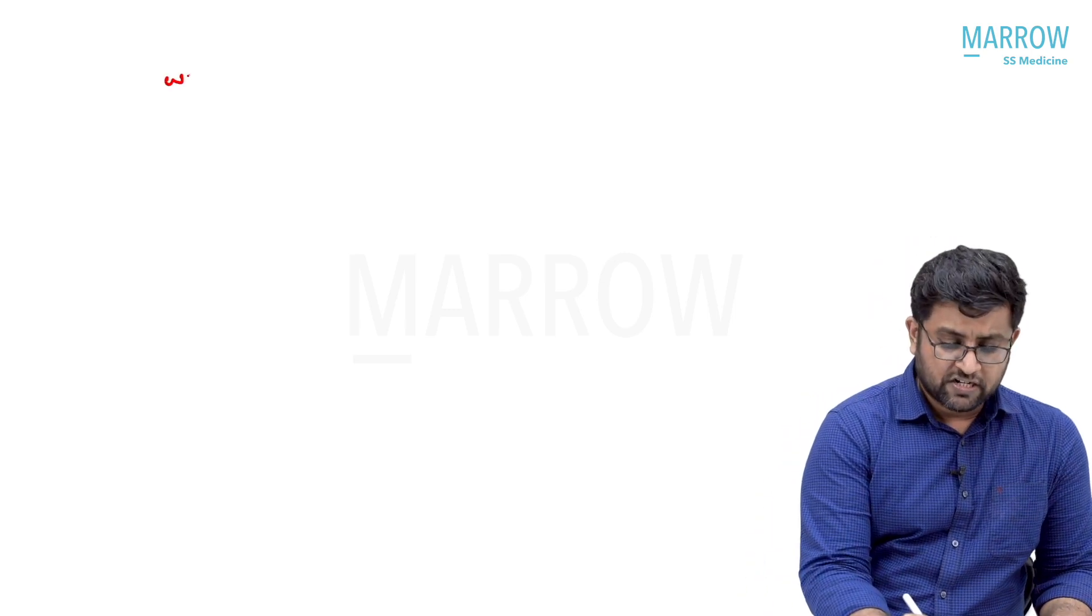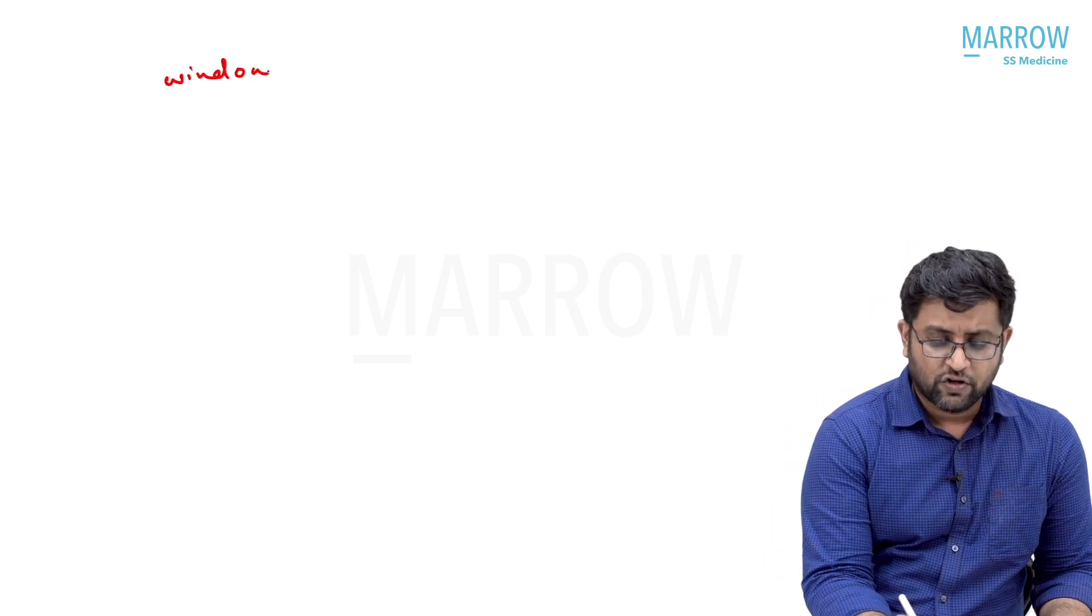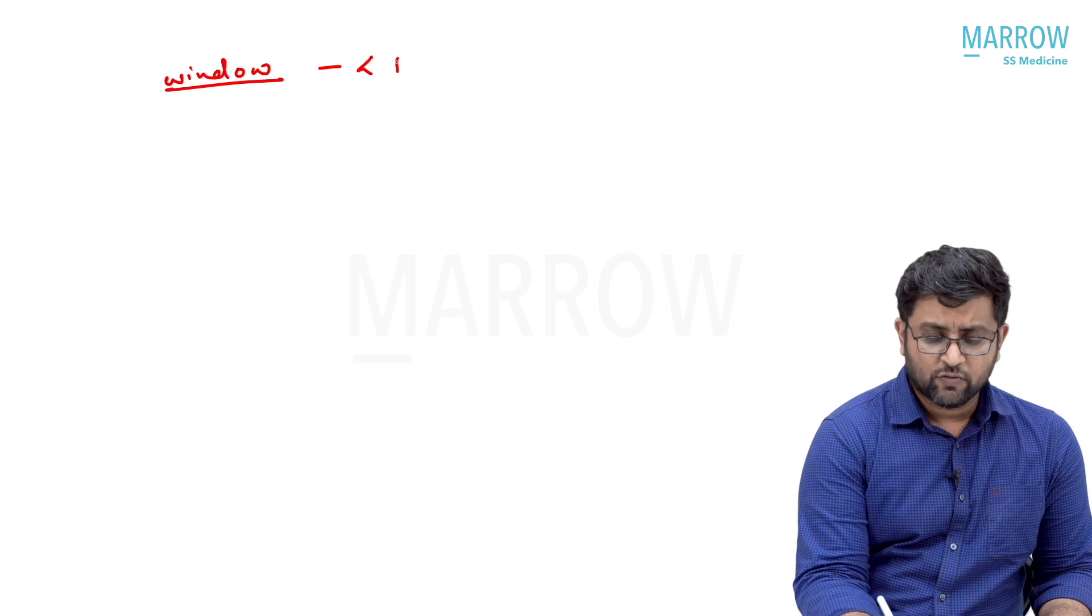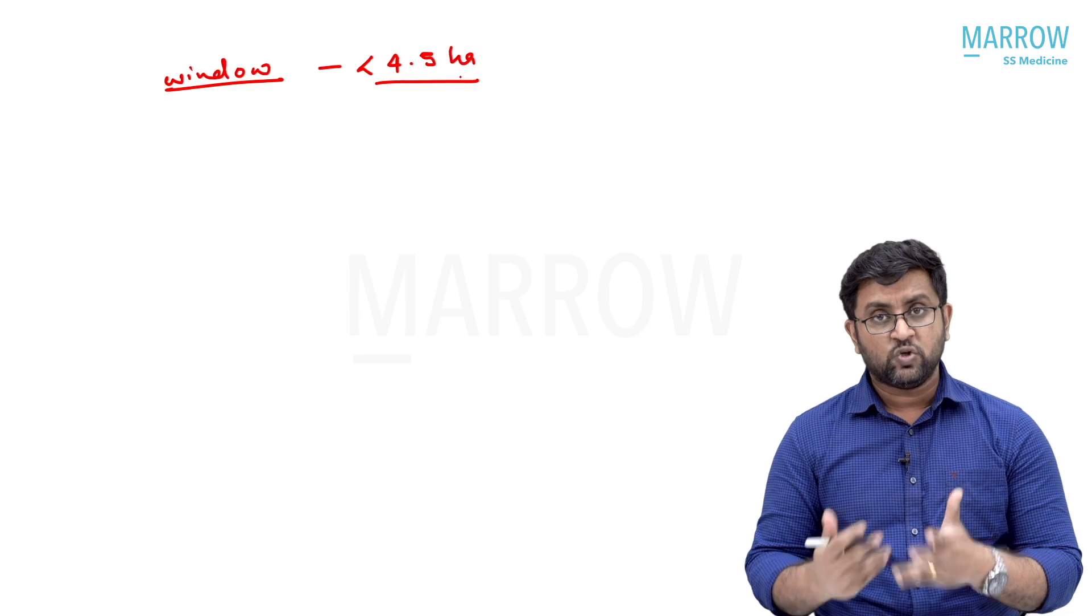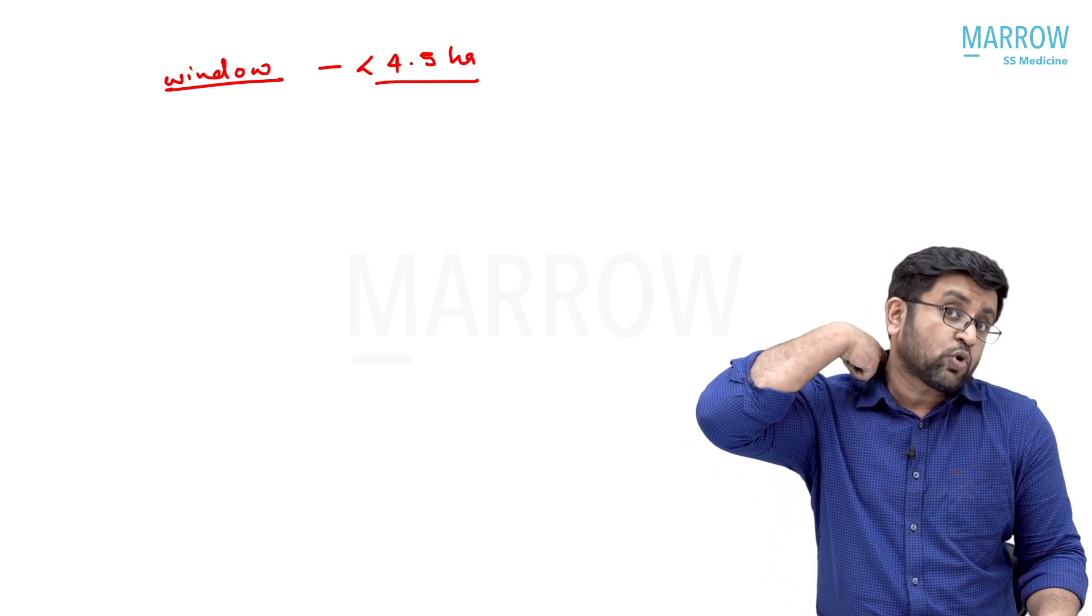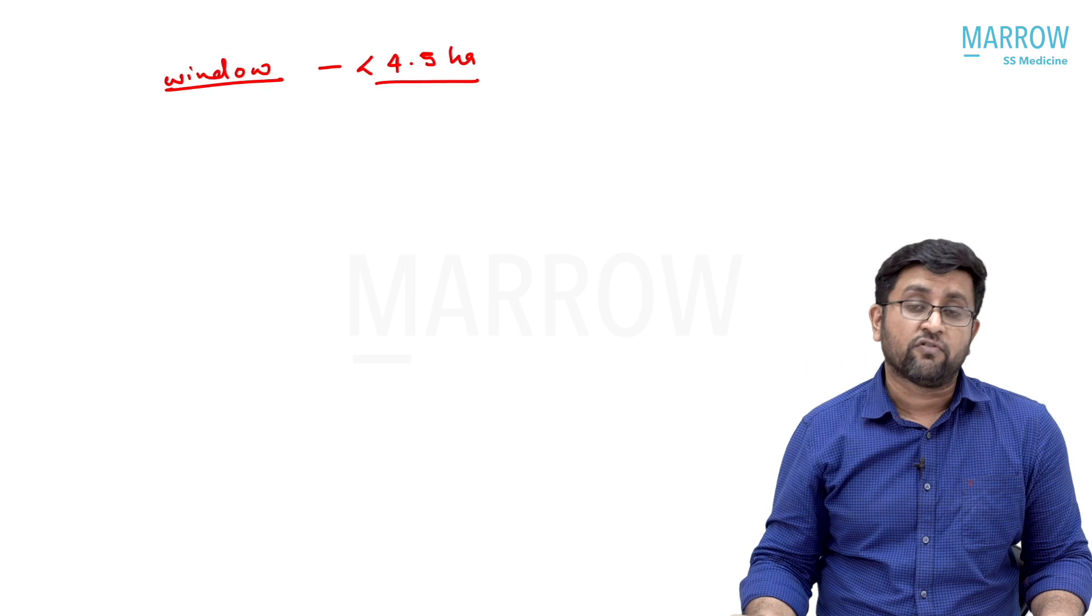We will discuss stroke management. Suppose a patient comes to you with acute stroke. You should understand the window for thrombolysis. The window for thrombolysis as of now is less than 4.5 hours. But there have been new updates and studies where they are taking late window thrombolysis after 4.5 hours.